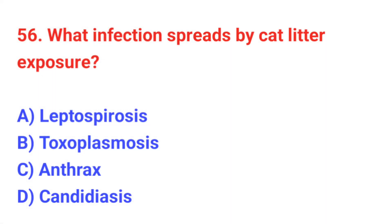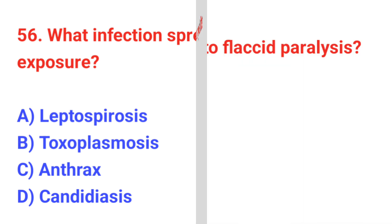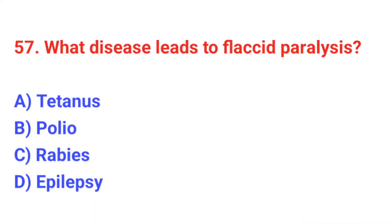Question number 56: What infection spreads by cat litter exposure? The correct answer is B: Toxoplasmosis. Question number 57: What disease leads to flaccid paralysis? The correct answer is B: Polio.